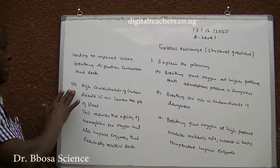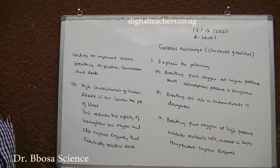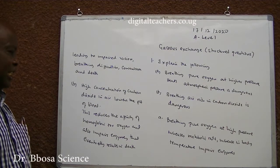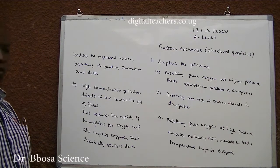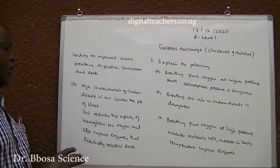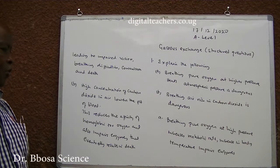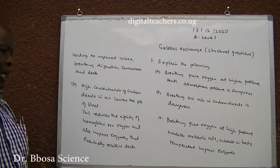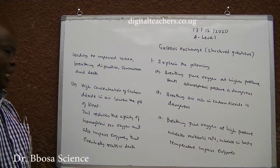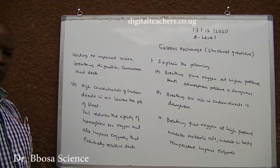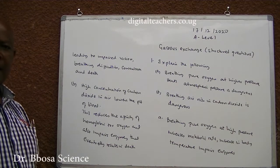B: High concentration of carbon dioxide in air lowers the pH of blood. This reduces the affinity of hemoglobin for oxygen and also impairs enzymes, which eventually results in death.